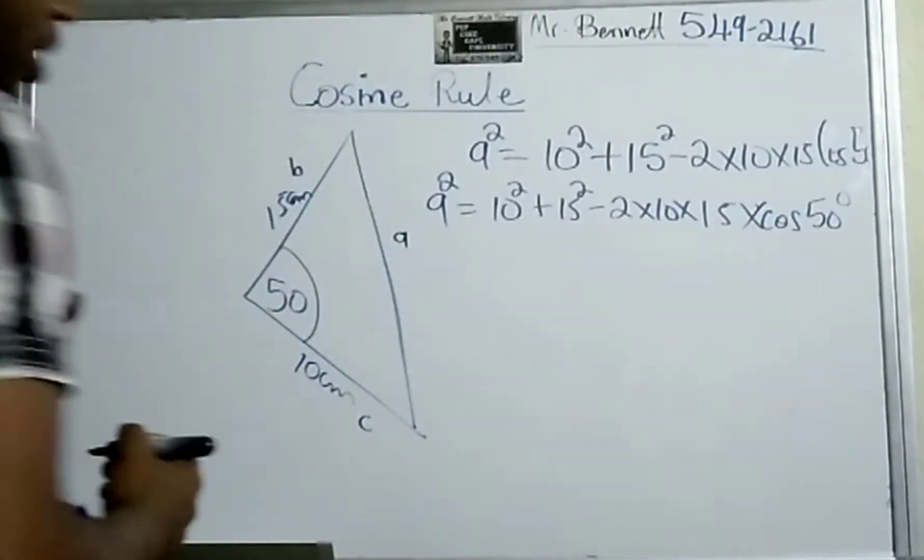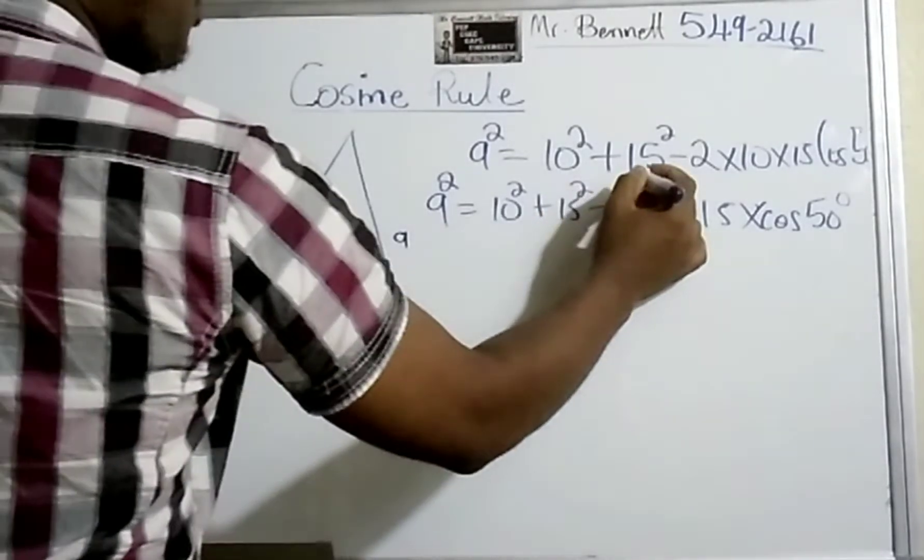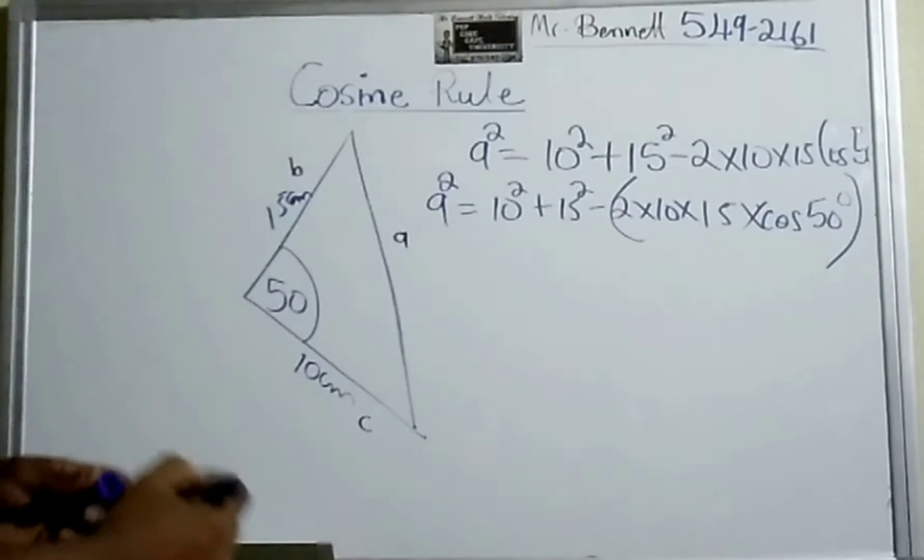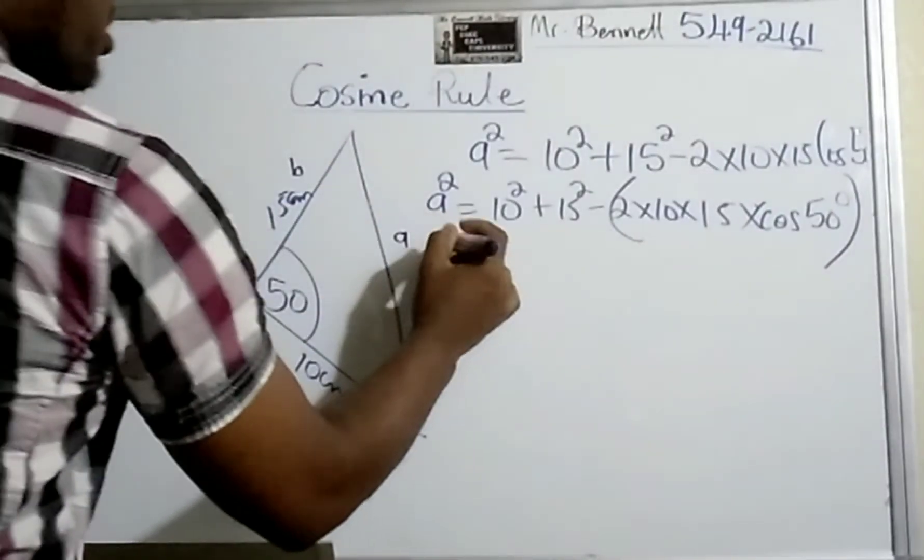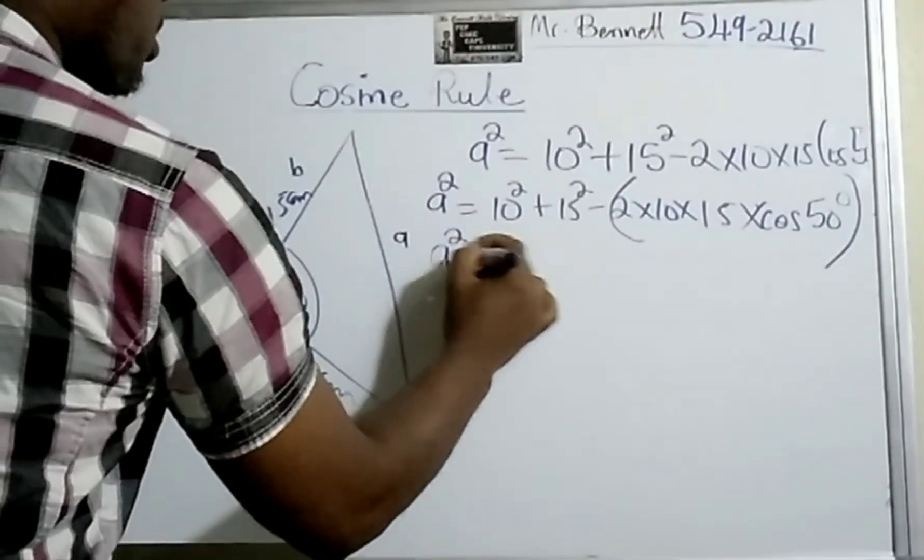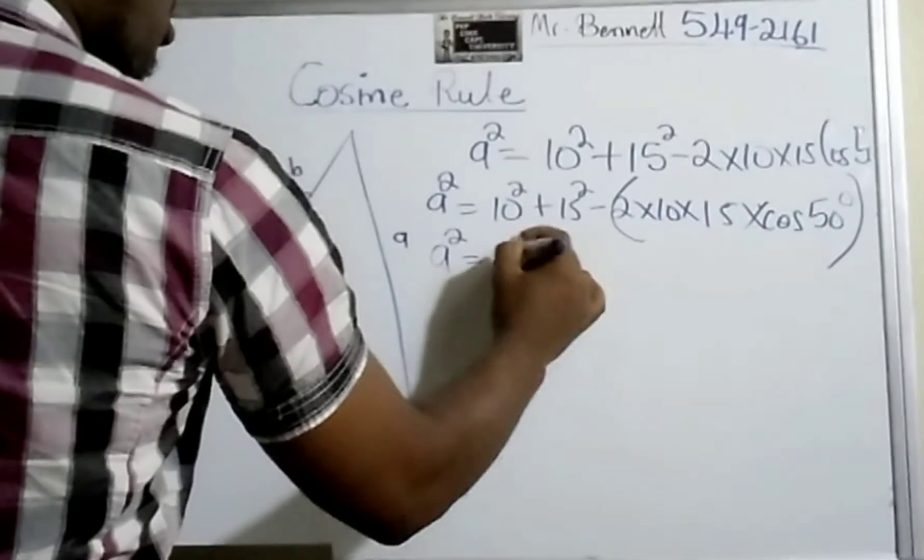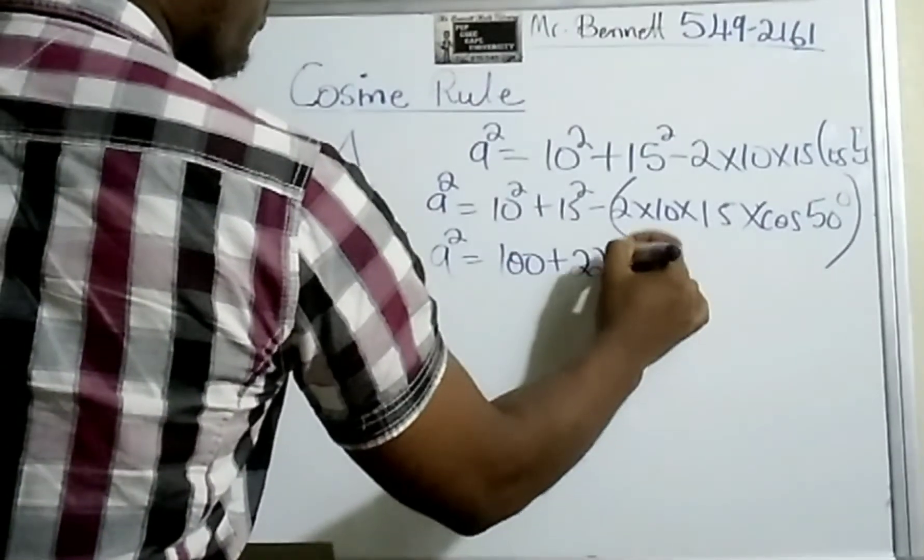I want you guys to put a big bracket right here as we're going to work out that part first before you subtract anything. So a² would be equal to 10² (which is 10 × 10, that's 100) plus 15 × 15, which is 225.